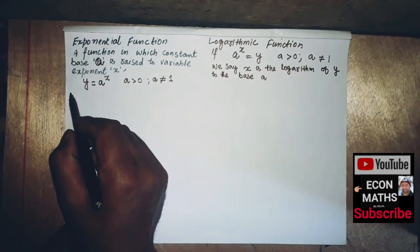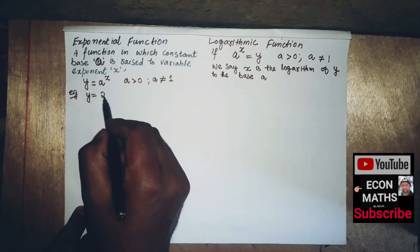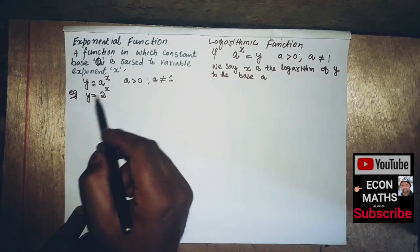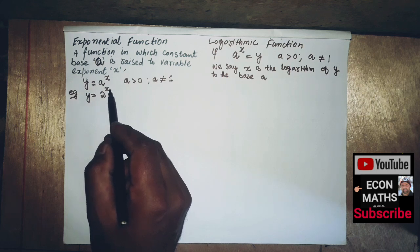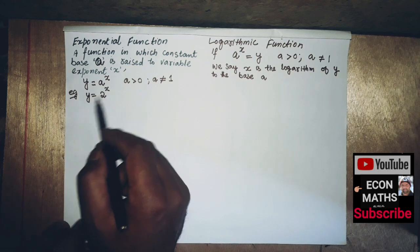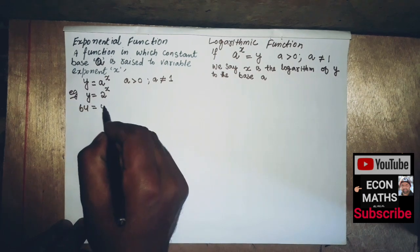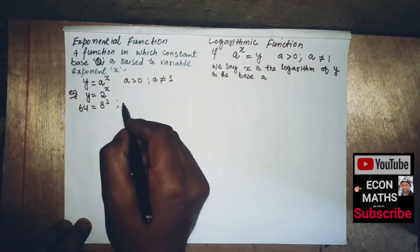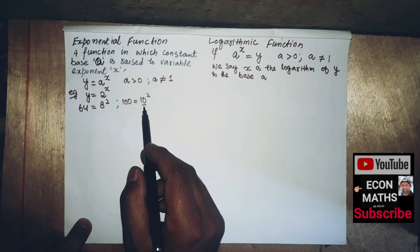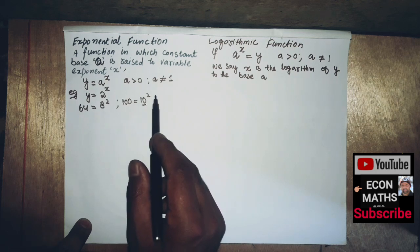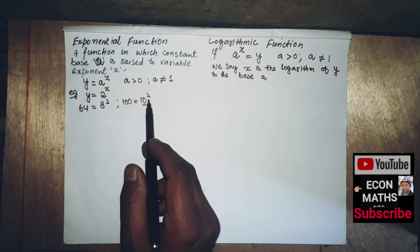For example, y is equal to 2 to the power x. This is an exponential function because the base is constant and the power is variable. We can also write 64 is equal to 8 squared, or 100 is equal to 10 squared, where the base is constant and the exponent takes different values.